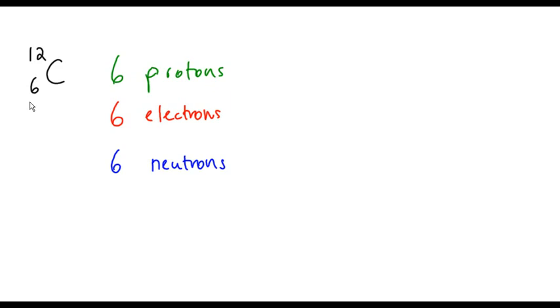So let's draw the atomic structure of what that looks like. We're going to use blue dots for neutrons, green dots for protons, and red crosses for electrons. So in the nucleus, we have the neutrons and the protons. So we have 6 neutrons, 1, 2, 3, 4, 5, 6.